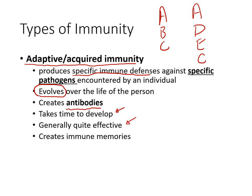Once adaptive immunity is up and running it is generally quite effective, and as a bonus you will have immune memory. You will remember what you've fought off previously, and if you encounter the same pathogen in the future you will be able to get rid of it much faster and with greater efficiency.